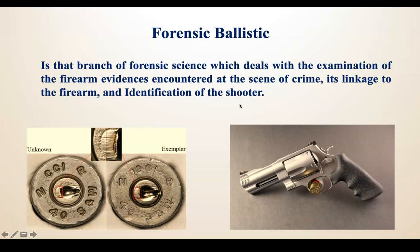Firearm evidence can be a firearm itself, a cartridge, a cartridge case, a bullet, or a firearm injury — all evidences encountered in a shooting case. These evidences provide linkage to the firearm and help identify the shooter. When we apply ballistic science in terms of law for the purpose of justice — to relate the crime with the criminal and the crime scene — that is forensic ballistics.